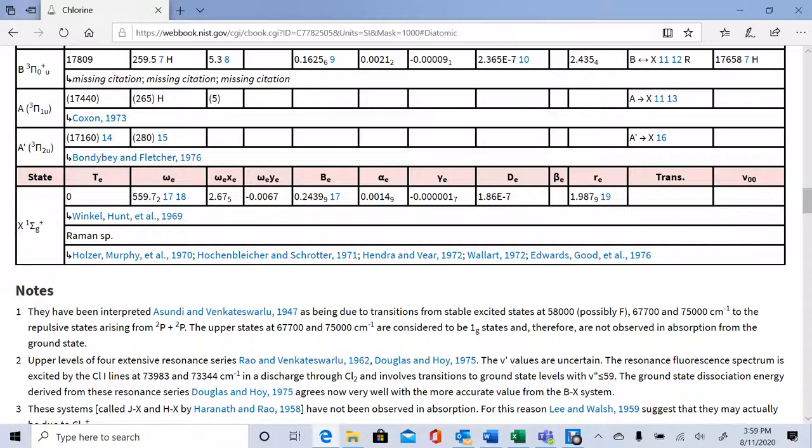Starting with this term symbol, the X means this is the ground state. This is the state we're interested in. Pay attention to the number in the superscript. This corresponds to the electronic ground state configuration. The one means that for chlorine, the ground state is a singlet.